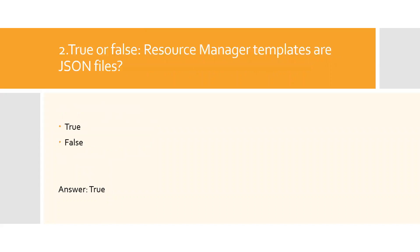Question two: True or false — Resource Manager templates are JSON files? Resource Manager templates are JSON files that define the resources you need to deploy for your solution. The template can then be used to easily recreate multiple versions of your infrastructure, such as staging and production. The answer is true.